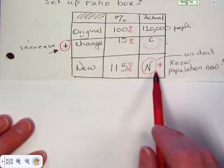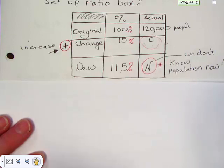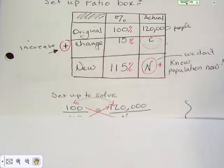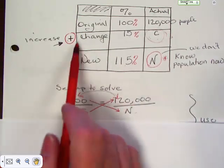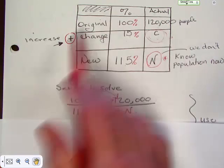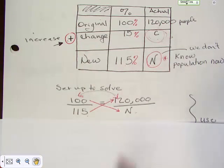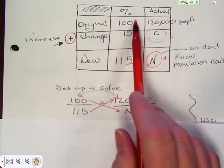And then the new amount is going to be this hundred plus this fifteen, which is a hundred and fifteen percent. And then this is what we need to know. We don't know what the population is now.